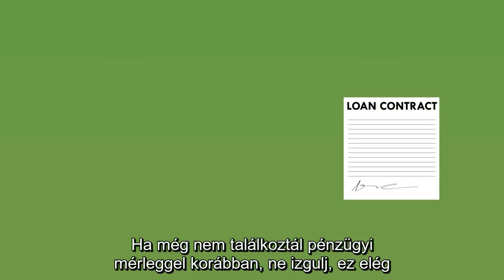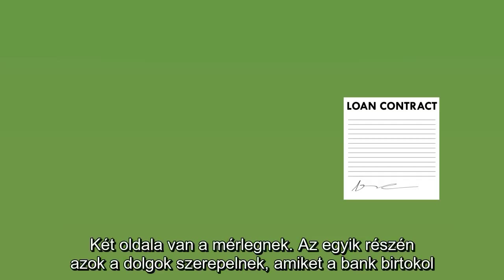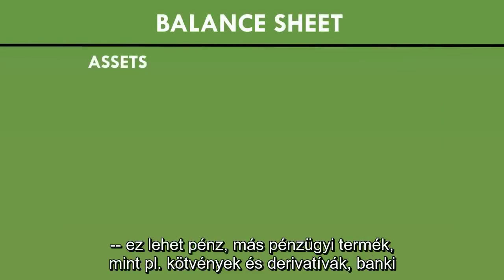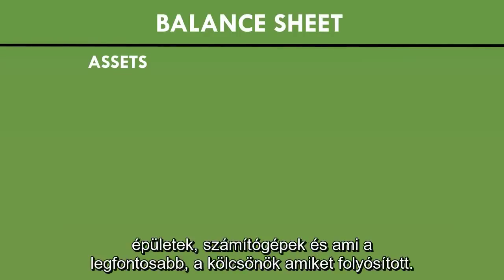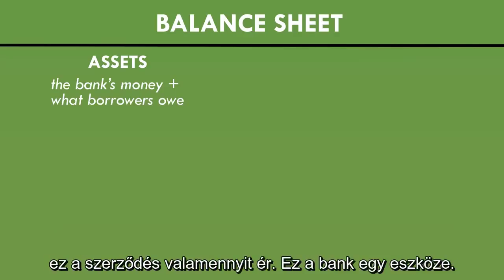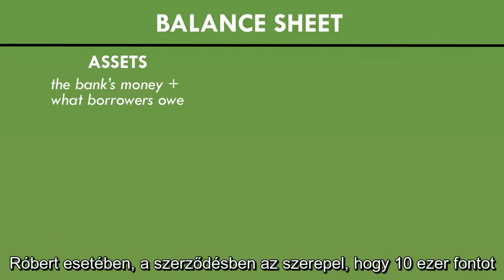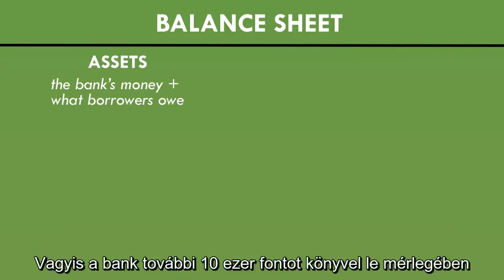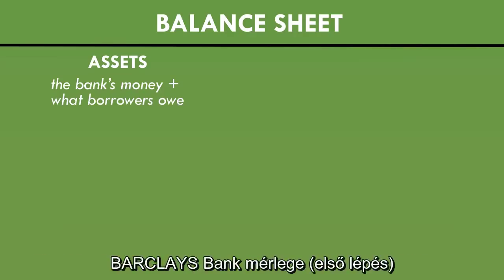Because it's an asset, Barclays can record the loan on its balance sheet. There are two parts to a balance sheet. One half records all the things that the bank owns — this could be money, other financial products like bonds and derivatives, bank buildings, computers, and most importantly, the loans it's made. If someone signs a contract promising to pay you money, that contract is worth something — it's considered an asset of the bank. In the case of Robert, the contract promising to pay the bank £10,000 plus interest over the next few years is worth at least £10,000 to the bank, and therefore it is an asset. So the bank puts an extra £10,000 on its balance sheet.